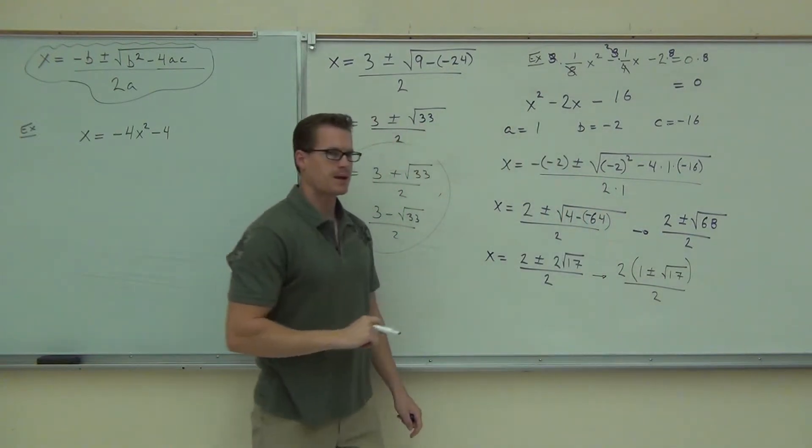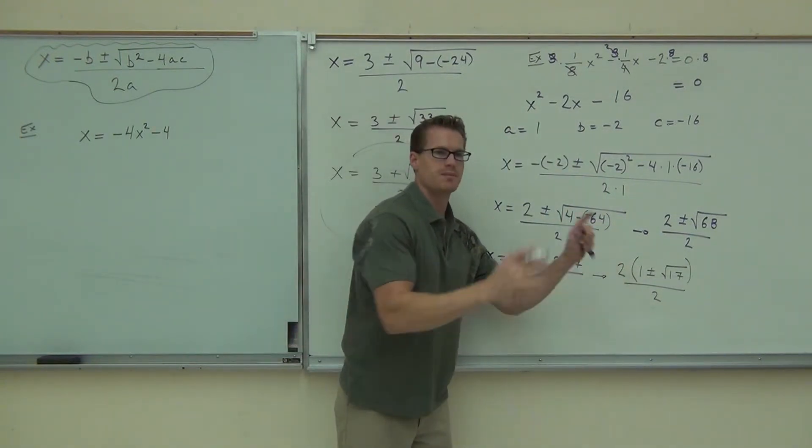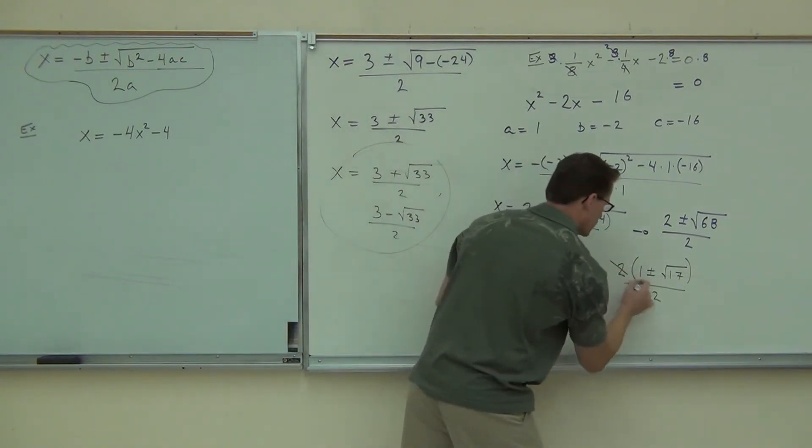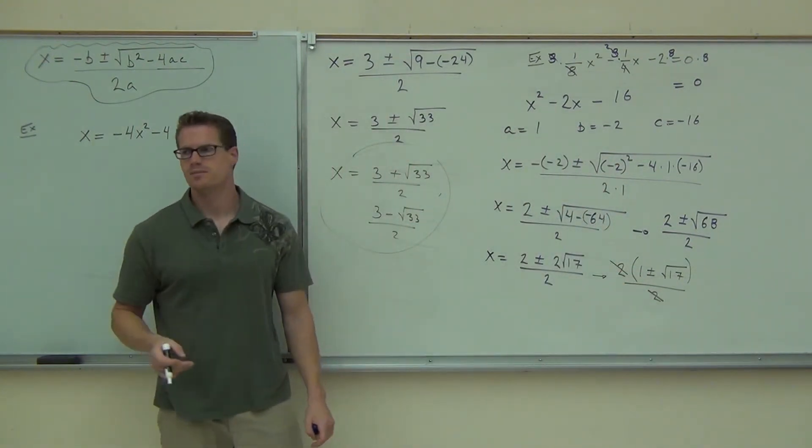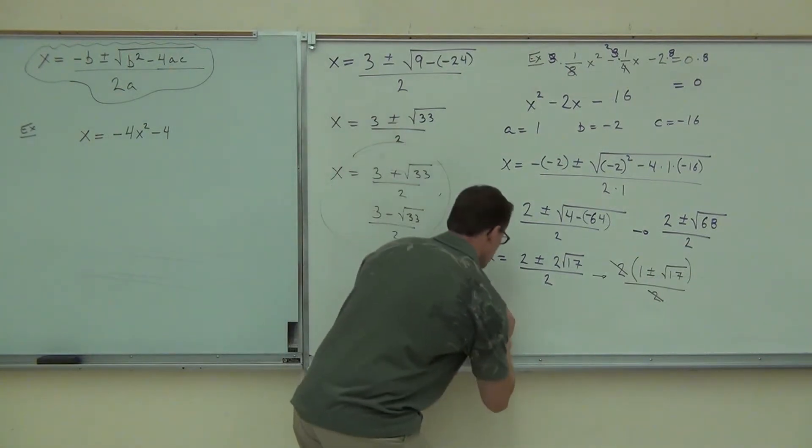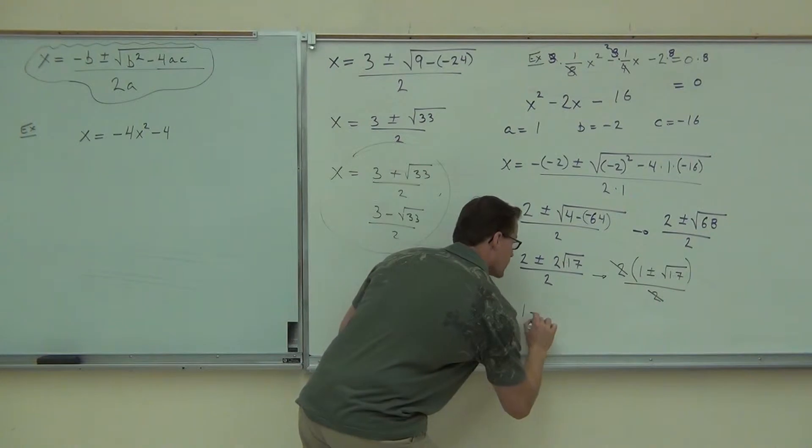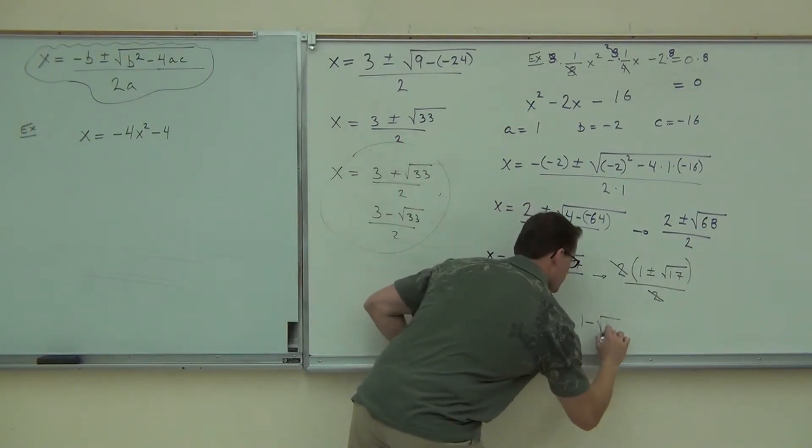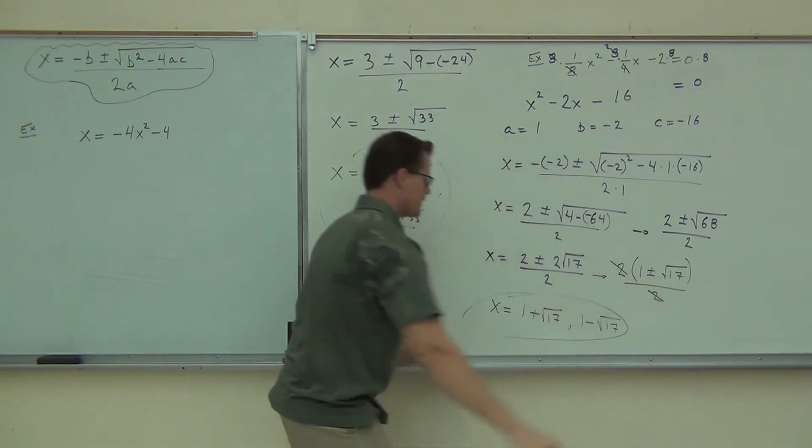So you have to do one plus or minus the square root of 17. Notice the difference. Now, that's being multiplied by the entire expression. That's what you can simplify. Those are now gone. What's on the denominator of a fraction? One. Do you need to write the one? Not really. You've got one plus the square root of 17. You've got one minus the square root of 17. And that's as good as you can do.